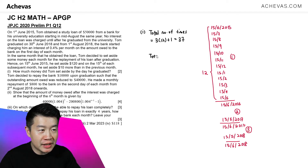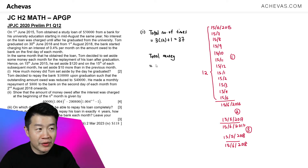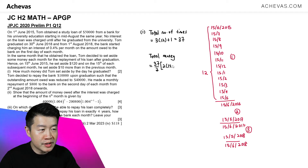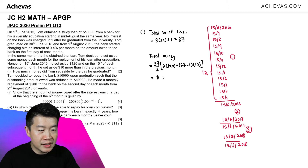Which means the total amount of money that Tom is going to be setting aside — applying the sum of an AP formula with the number of terms as 37 — is 37 divided by 2, times 2 times the first term (which is 120), plus the number of terms minus 1 (37 minus 1) times the common difference (which is 10). So the total amount of money that he is going to be setting aside will be $11,100.